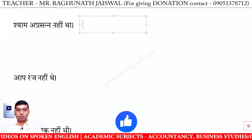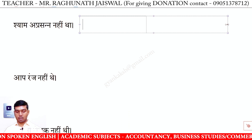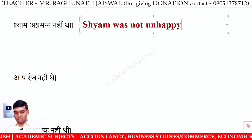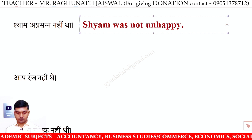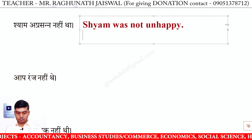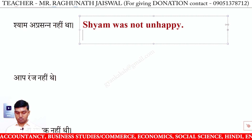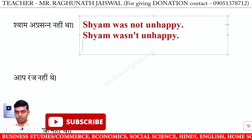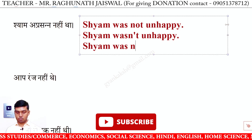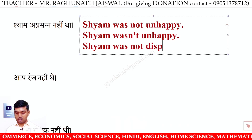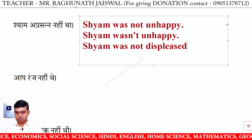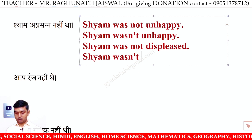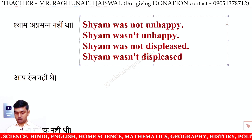Shyam a-prasann nahi tha — Shyam was not unhappy. Short form: Shyam wasn't unhappy. Shyam was not displeased. Short form: Shyam wasn't displeased.